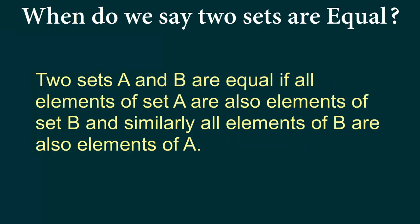Two sets A and B are equal if all elements of A are also elements of B and similarly all elements of B are also elements of A. When this happens then we say that set A is equal to set B and when two sets are equal we notice that the number of elements of set A will be equal to number of elements of set B.